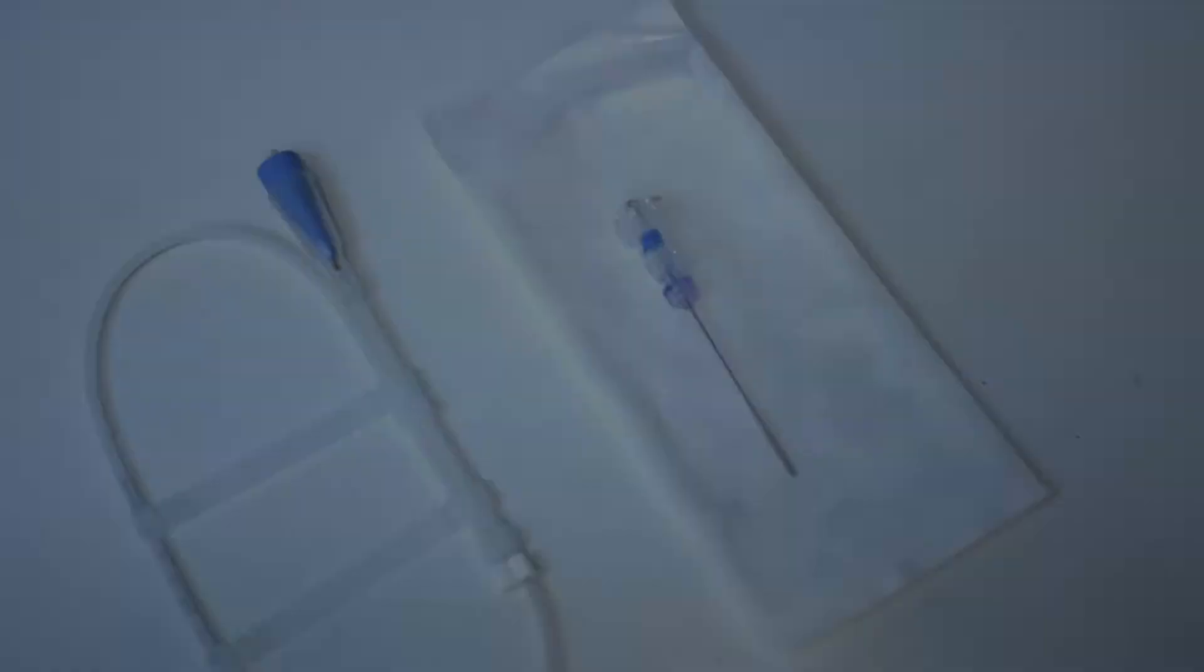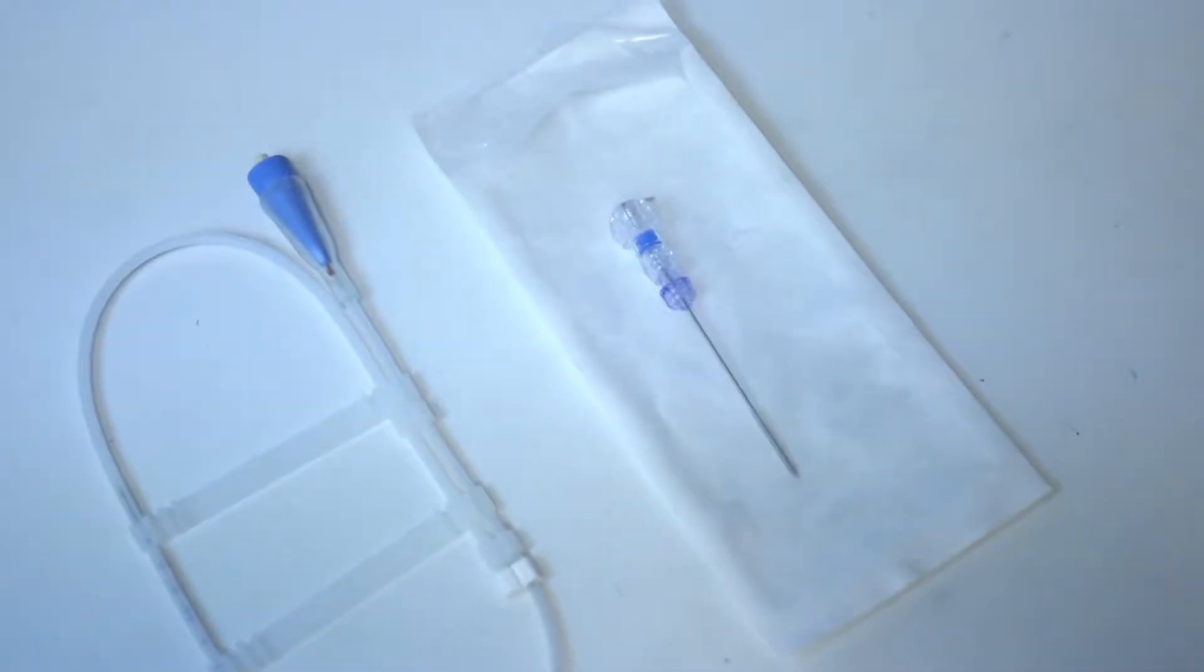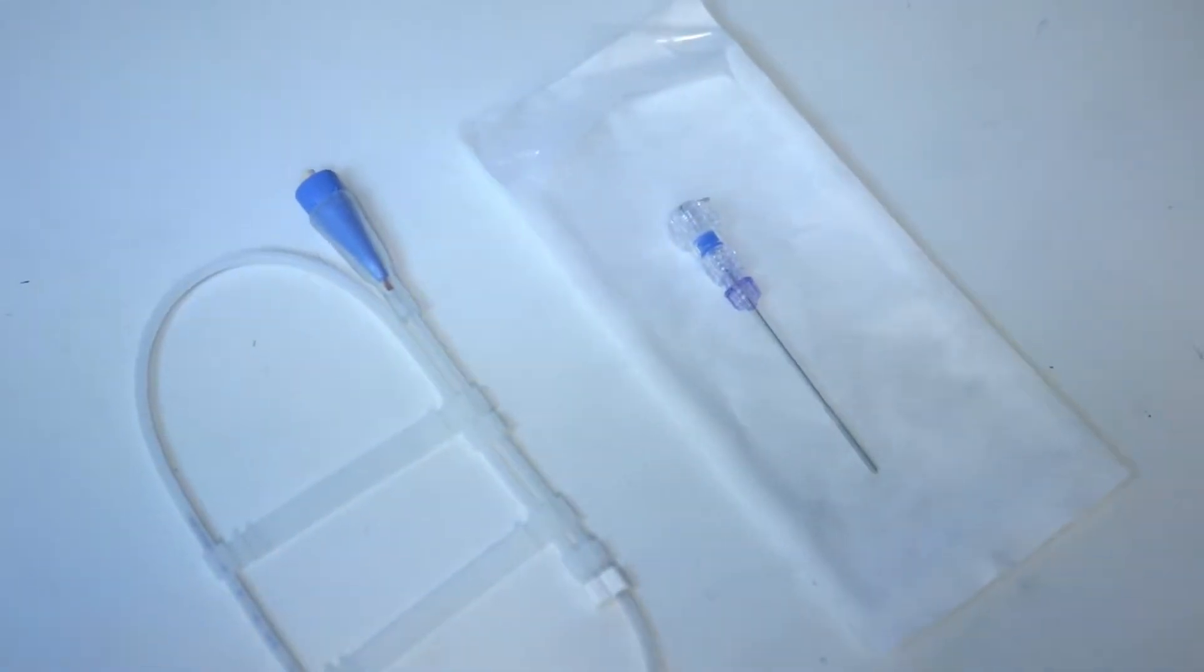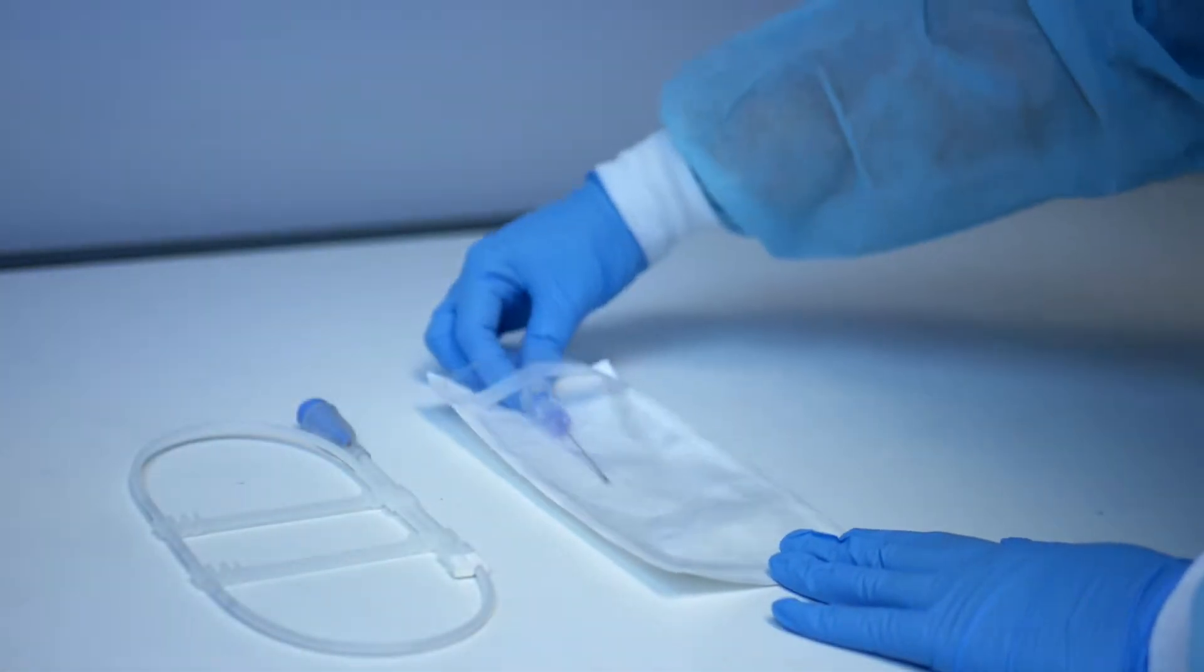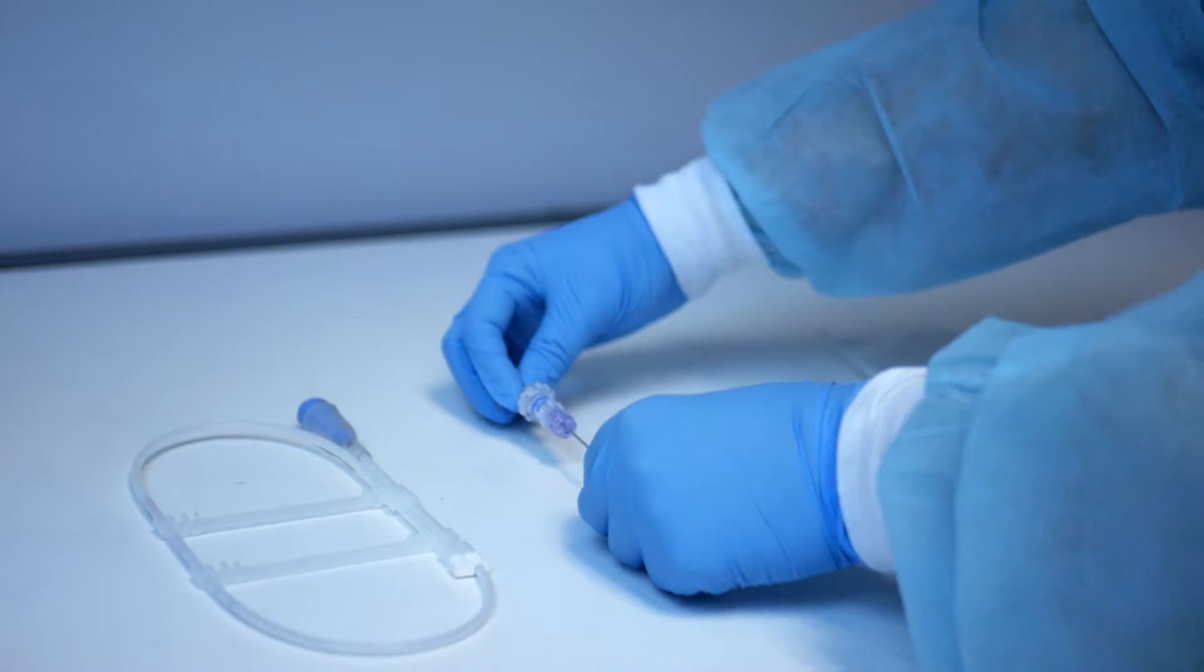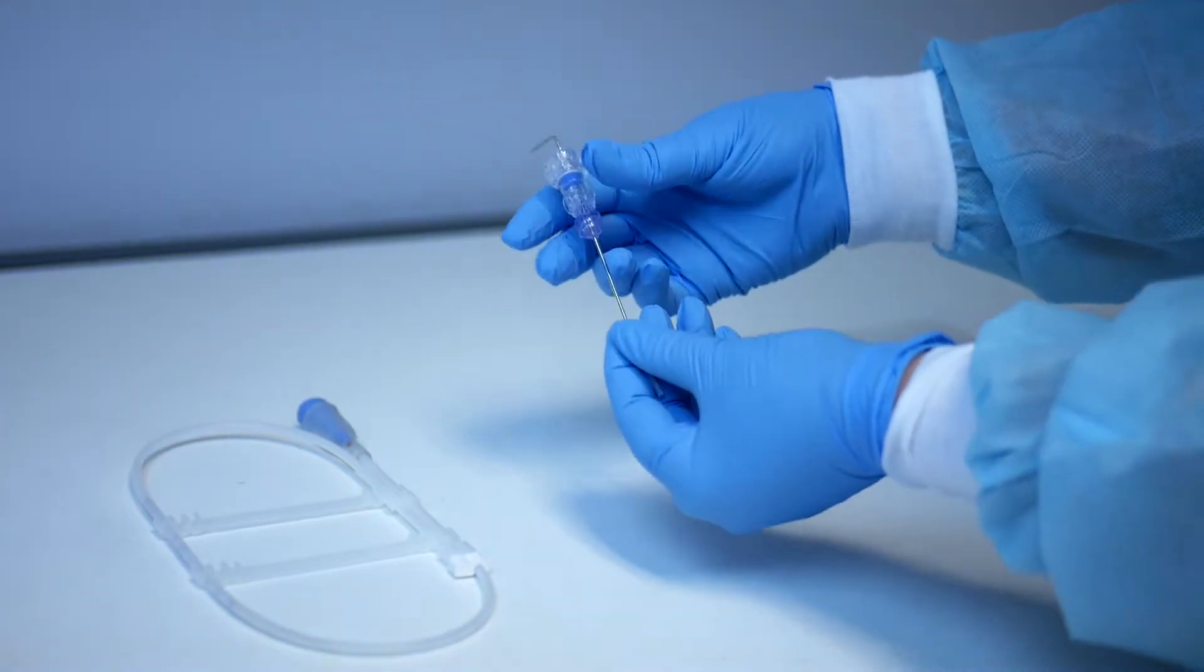Ensure you have both the Hemetix Q-Flow 500 perfusion probe and the probe durapiercer and introducer kit. Remove the probe durapiercer and introducer from its packaging. Remove the silicone tubing at the end of the durapiercer.